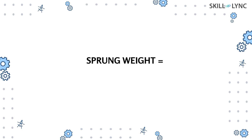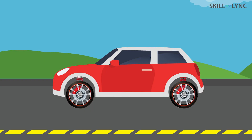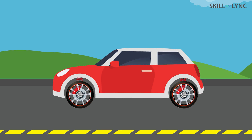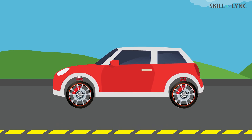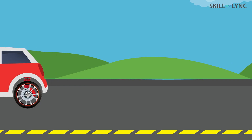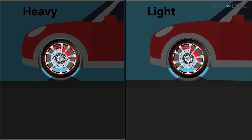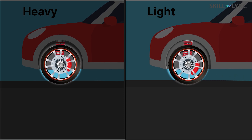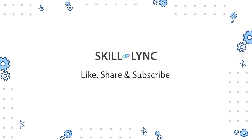The sprung weight is determined by subtracting the unsprung weight from the total weight of the vehicle. As the sprung weight is high, it pushes the unsprung weight down and gives the wheels more grip while the car moves. The lighter unsprung setup reacts to bumps more quickly, constantly maintaining wheel grip and improving handling. So that's it for this video, guys. In the next one, we'll be talking about the types of suspension systems. Until next time, bye!